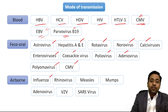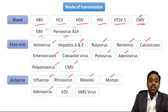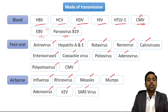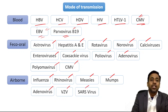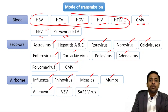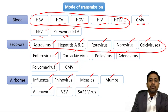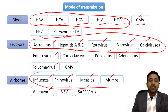For airborne transmission: influenza virus, rhinovirus, measles, mumps, adenovirus, VZV, and RSV. Remember the important viruses for each route — bloodborne, feco-oral, and airborne.